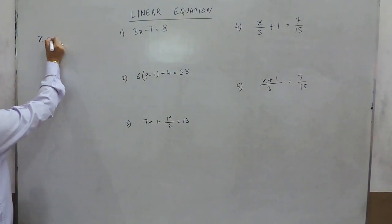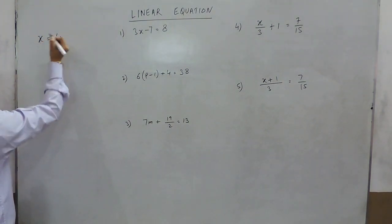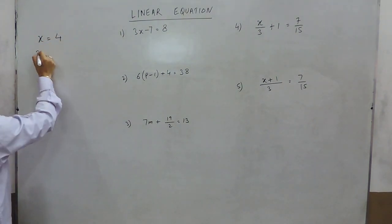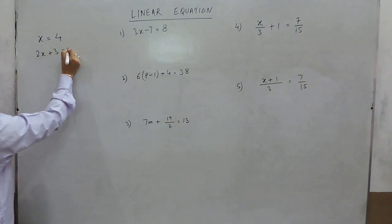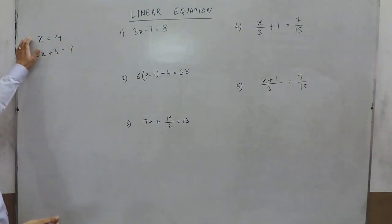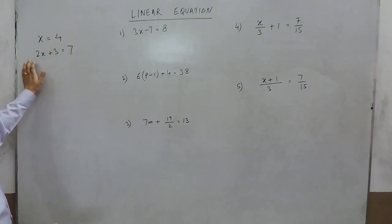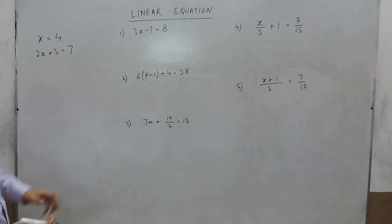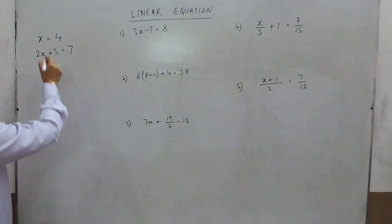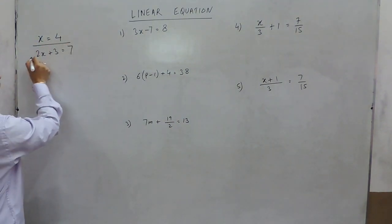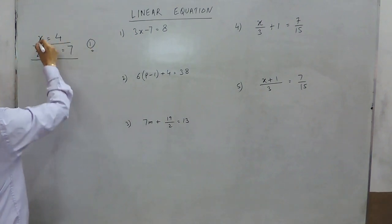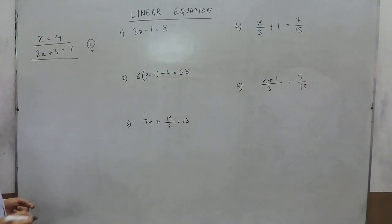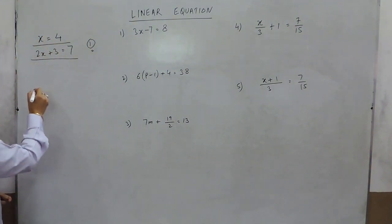Expressions like x equals 4, or 2x plus 3 equals 7 — all these are known as linear equations. These are equations in one variable, where x is the variable.